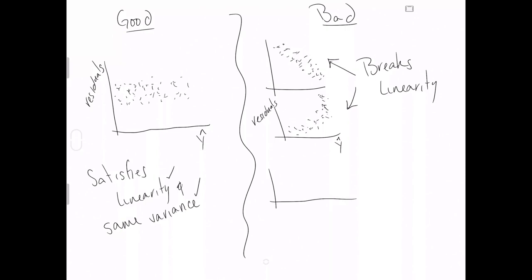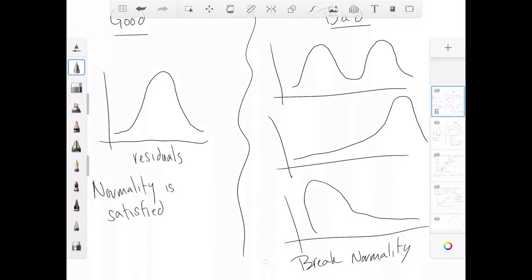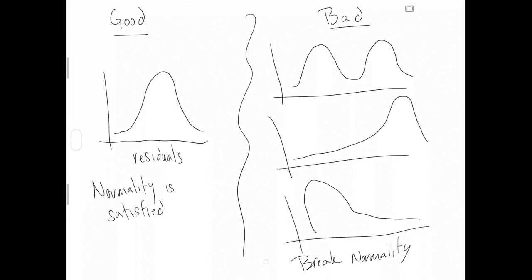These two plots — residuals on y-hat, and density plots of the residuals — are used for most of the rest of the models we'll look at in this class. Even though future models will be more complex, these plots will stay the same. I'm laying the foundation here for future models. Anytime there's non-constant height to the points, it breaks same variance.